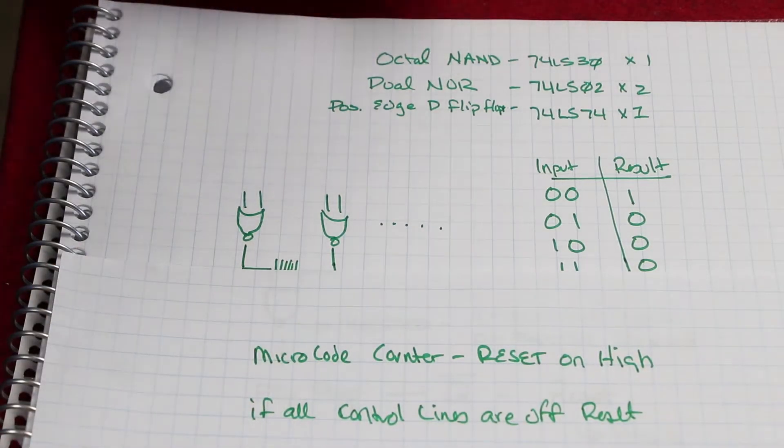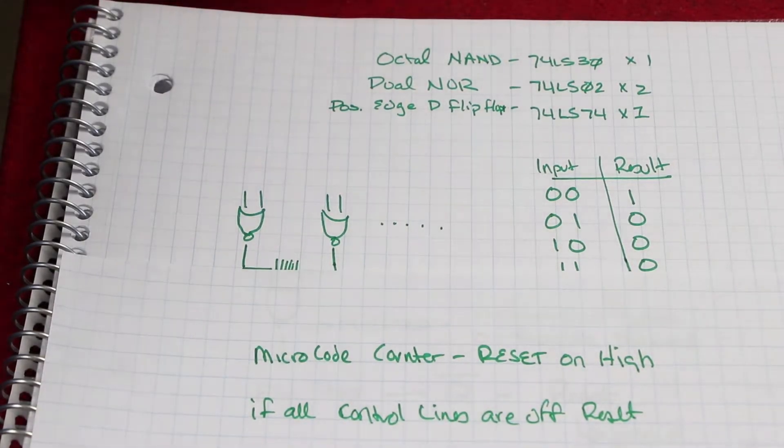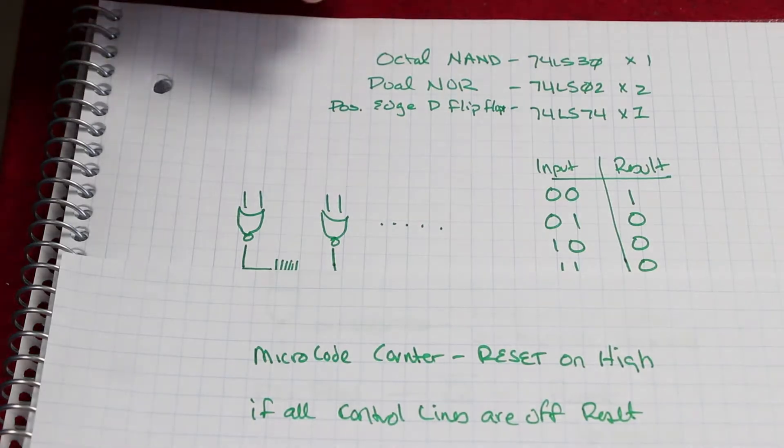The first thing we need to do is figure out how to combine all of the control signals so that we can arrive at one control signal that controls the reset.